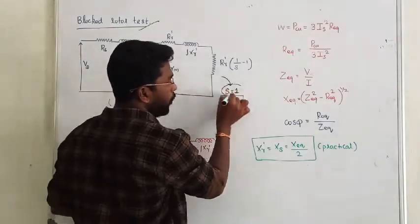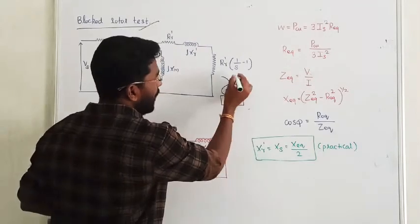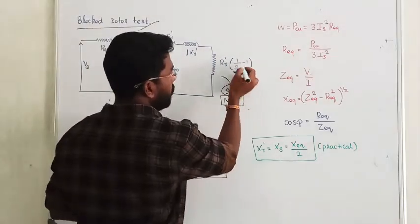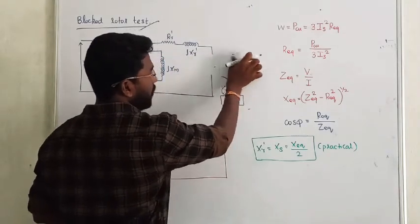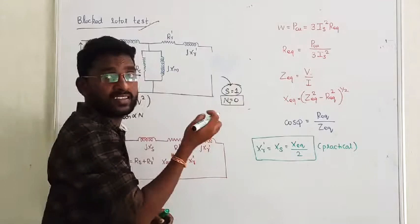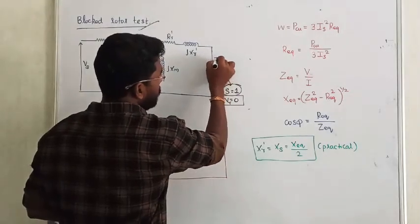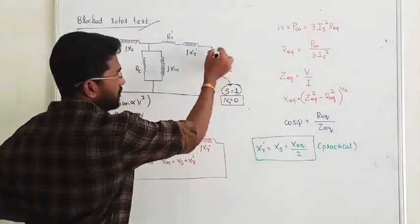Rotor speed zero, slip becomes 1. Rotor becomes zero, slip is 1. One by one becomes one, one minus one becomes zero. So this total value is going to be zero. If it is zero, resistance will become zero. Resistance zero in the circuit, that is called short circuit test. The current through this line is called short circuit current.